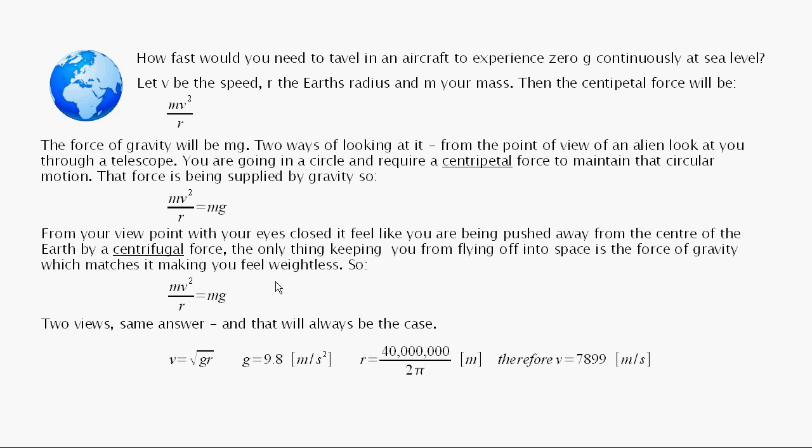Now from your point of view, what does it look like? Well, if you close your eyes, you're going in a circle, so it feels like you've got this centrifugal force pushing you away from the centre of the Earth. And that's going to be equal to mv² over r, and the only thing that's keeping you from flying off into space is the force of gravity, which exactly matches it, so that you feel as though you're weightless. So what you have is mv² over r is equal to mg, exactly as before. So you've got two views, both give the same answer. And that's always going to be the case.